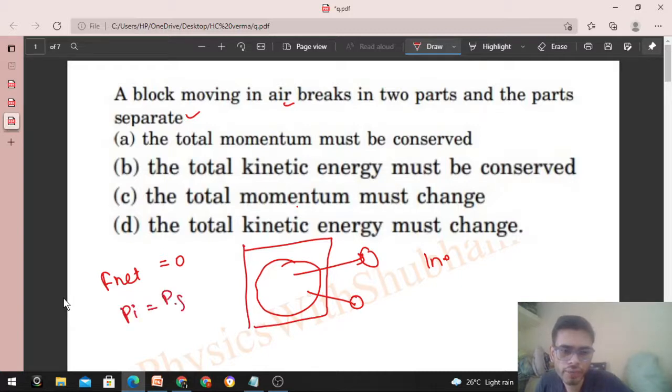So initial momentum will be equal to final momentum - that is the conservation of linear momentum. If net external force on a system is zero, then momentum must remain conserved. So option a is correct. So option c will be wrong, that total momentum must change.